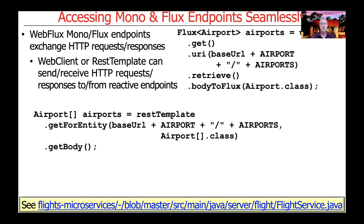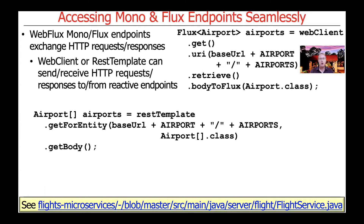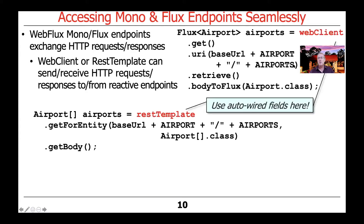We'll take a look at this from a couple of different points of view — first the slides, then we'll run some examples. You can see that you can use either WebClient, which is the async reactive way of programming, or you can use REST Template to send and receive HTTP requests and responses to and from reactive endpoints. If you define your controllers with reactive types, you can access them either way or both ways. It's a good idea to auto-wire the fields so all the initialization is done properly for everything to work transparently and seamlessly.